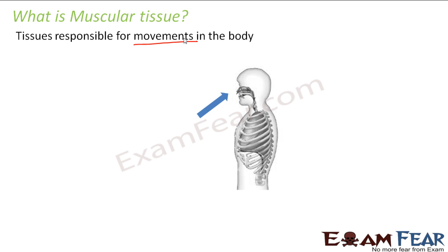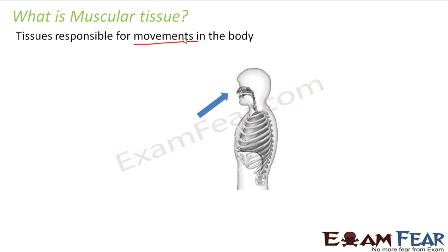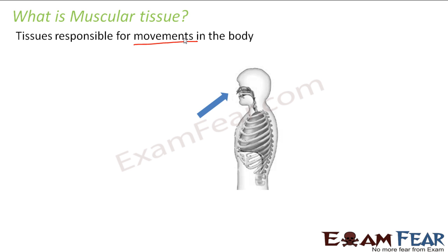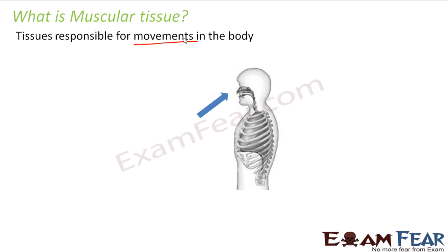For example, when we breathe, the chest muscles move. There is some movement which keeps happening in our chest. If you want, you can try it yourself — breathe in and breathe out and just keep your hand over your chest, and you can feel that there is some kind of movement as shown in this picture. That movement happens because of the expansion and contraction of the chest muscles.